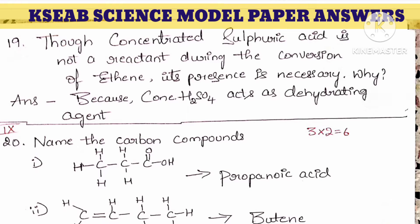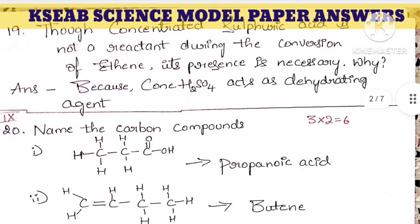Next question: though concentrated sulfuric acid is not a reactant during the conversion of ethene, its presence is necessary — why? The answer is because concentrated sulfuric acid acts as a dehydrating agent.